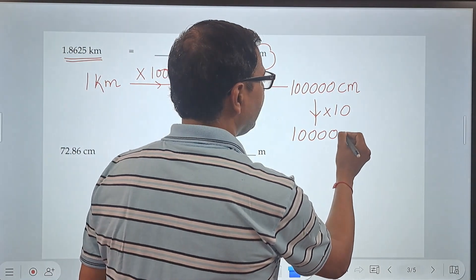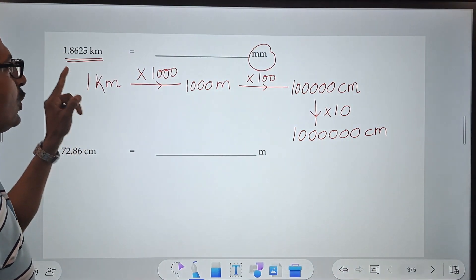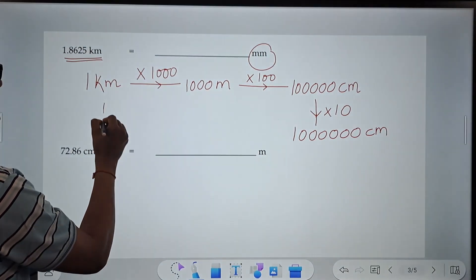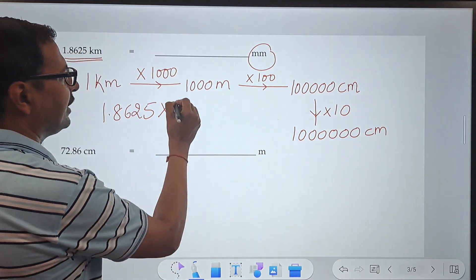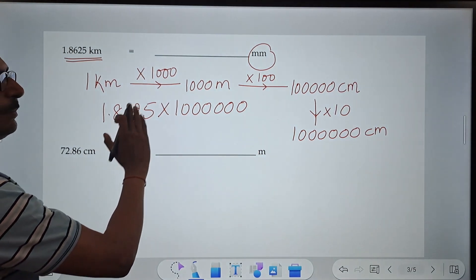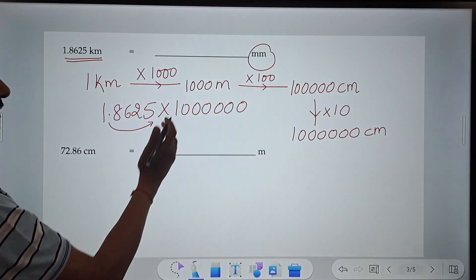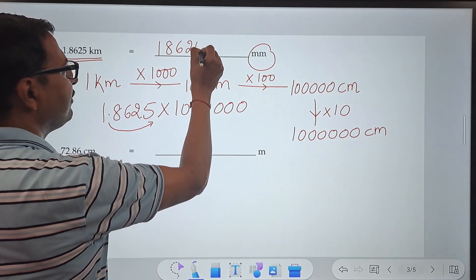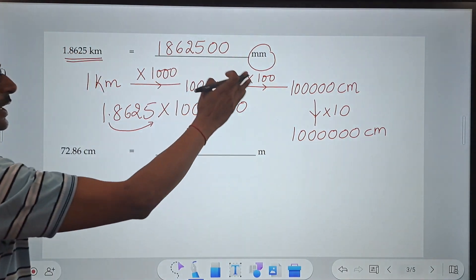So if you have 1.8625 kilometers and you want to convert that to millimeters, you just have to multiply 1.8625 by this factor—1 followed by 6 zeros. And when you have to multiply any decimal by 1 followed by 6 zeros, you have to shift the decimal place 6 digits towards the right. That means 4 digits are already there. So 1, 8, 6, 2, 5—I have shifted it 4 digits, and now we need 2 zeros, which will give us the answer in millimeters.